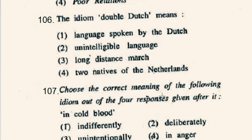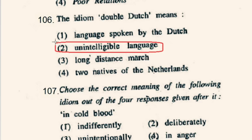Question number 106: The idiom 'double Dutch' means an incomprehensible talk or unintelligible language. So option 2nd is correct: unintelligible language.